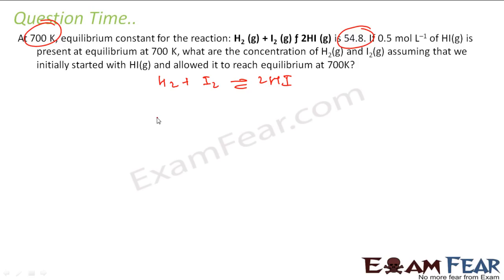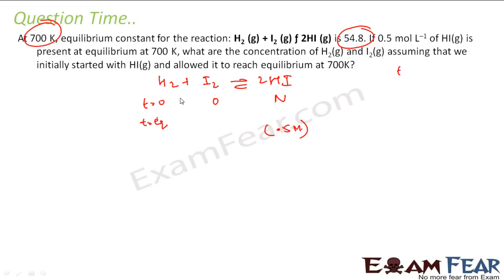That means I will write here: at T equals equilibrium, this value is 0.5 moles per liter. What is the concentration of H₂ and I₂? Assuming that we initially started with HI — let's suppose we started with n moles of HI and 0 moles of H₂ and I₂. After some time, let's suppose this becomes n minus x, and x and n minus x for the other species.